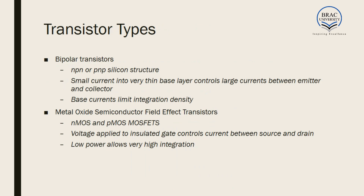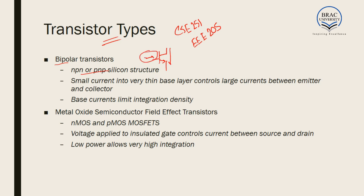In our device courses — CSE 251 or CSE 205 for CSE students — we have learned about different types of transistors, including bipolar transistors or BJT, which can be NPN or PNP. A BJT contains an emitter, collector, and base. If we inject a current through the base, this base current modulates the current passing from collector to emitter. So BJT is a current-driven device. Since it is current-driven, BJT consumes a lot more power, and as a result the integration density is affected — the bipolar transistor is very difficult to integrate at a very large scale.